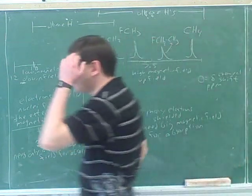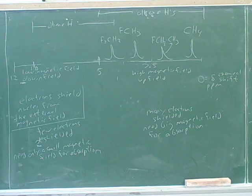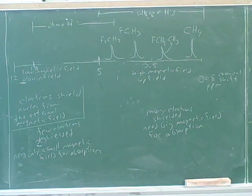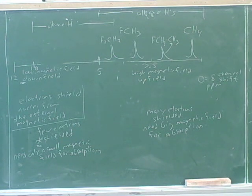These are just rules of thumb. You can actually look up much more precise predictions in tables. Do you get to use tables during the quiz? They should probably give you a table of the chemical shifts during the quiz, or you should ask the instructor. If they're not going to give you that table, you might need to memorize some chemical shifts. But these are the basic rules of thumb.